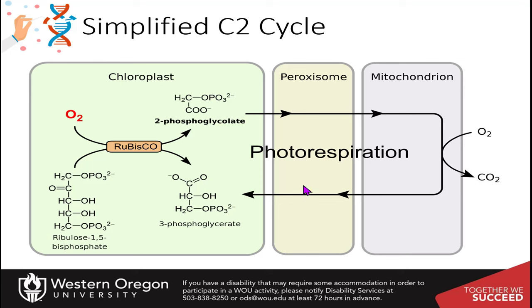It then goes back through the peroxisome to finish that process, and then has to get transported back into the chloroplast. This is quite a process to try to recover this, and it just is not efficient for generating sugar molecules or recovering the ribulose 1,5-bisphosphate needed to run the Calvin cycle.